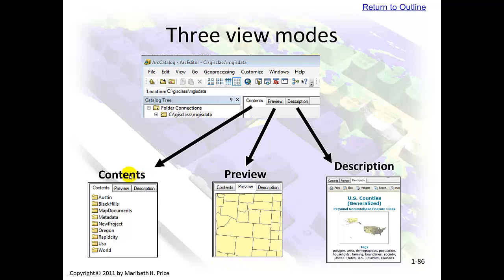There are three modes in ArcCatalog. There's Contents mode, which just lists the items. There's a Preview mode, where you see the data. And there's a metadata mode. These look very similar to Windows 7 views — there are small icons, large icons, and thumbnails.